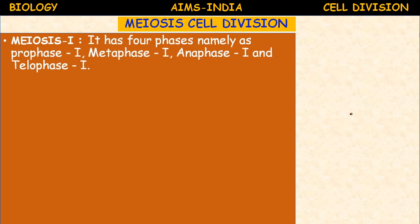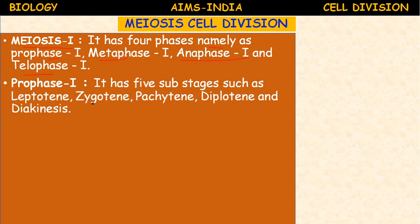Meiosis I has four sub-phases: Prophase I, Metaphase I, Anaphase I, and Telophase I — this is the first nuclear division. Prophase I is divided into five sub-stages for clear understanding: leptotene, zygotene, pachytene, diplotene, and diakinesis.